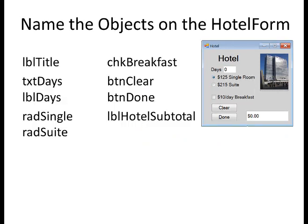Name the objects on the hotel form: LBL title; TXT days and LBL days for days; RAD single and RAD suite for the radio buttons; CHK breakfast for the checkbox to select the breakfast option; BTN clear and BTN done for the buttons; and LBL hotel subtotal.